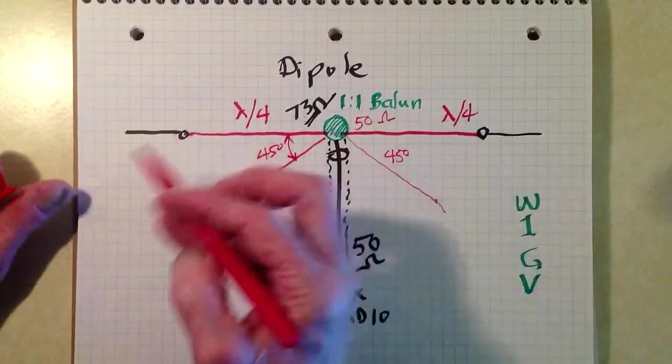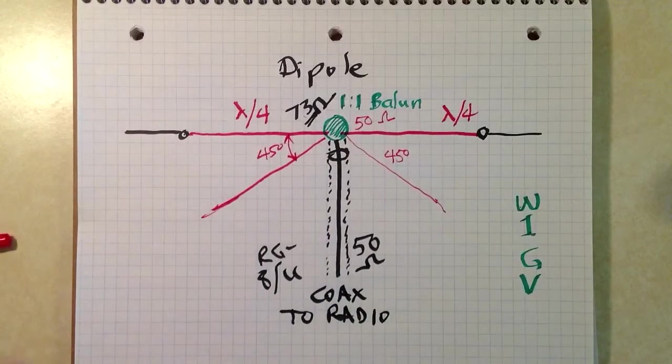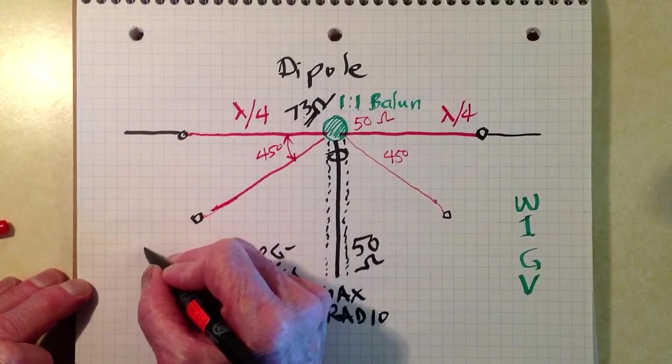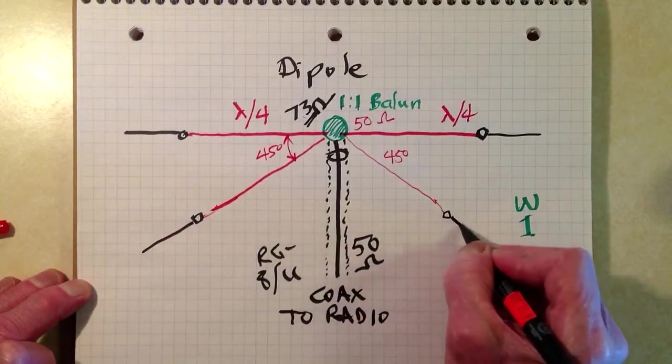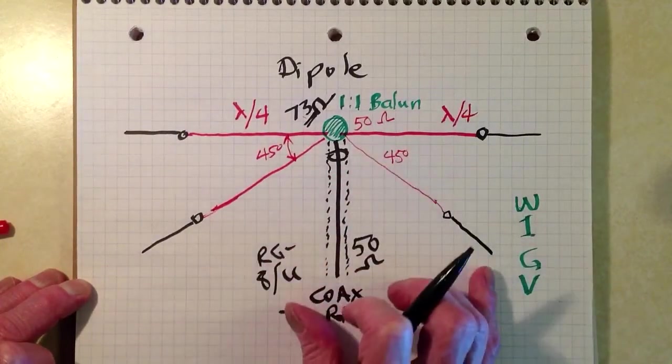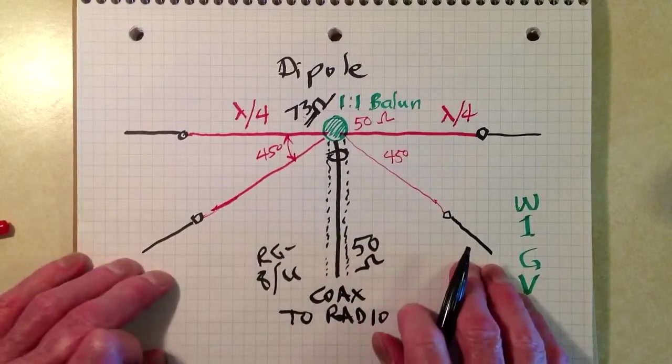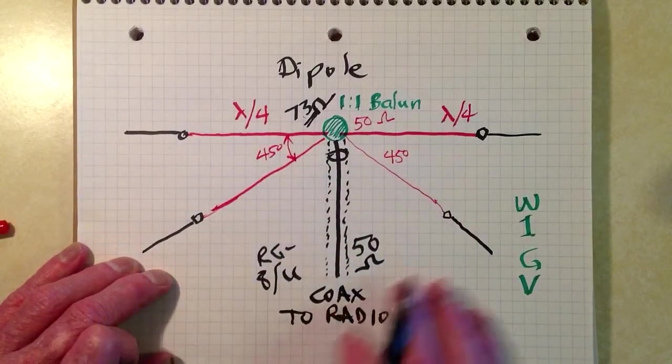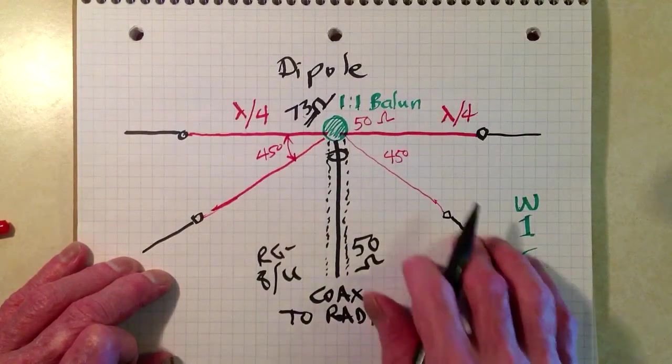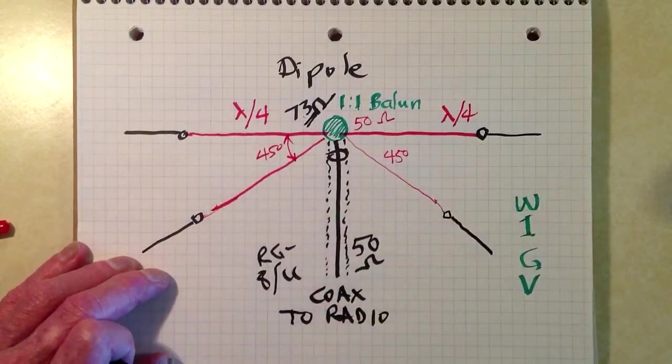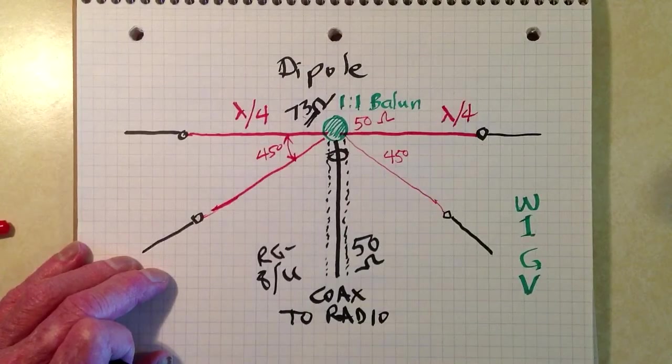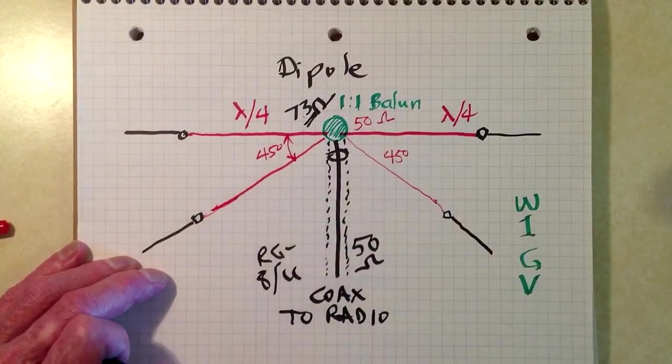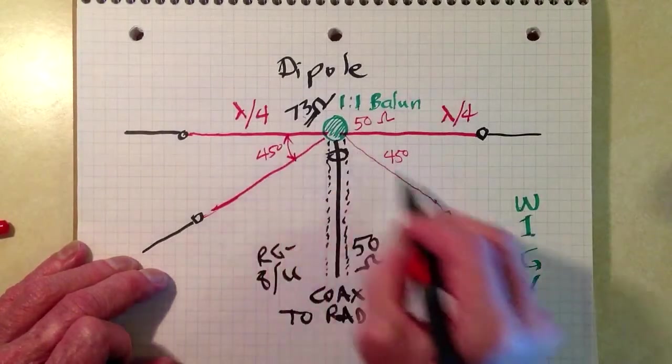These little black circles are insulators. And then you just run the rest of the element, you use nylon cord or something like that. So these are each still a quarter of a wavelength long. Maybe cut just a little bit to make up for that droop. Some of the droop will change the length just a bit. But you trim that until you get it just right.